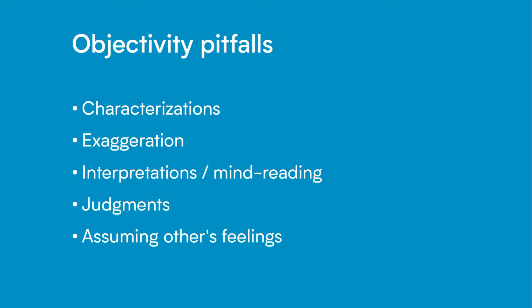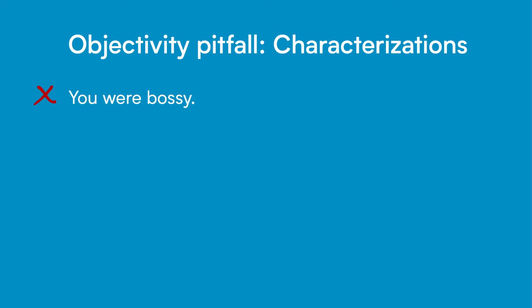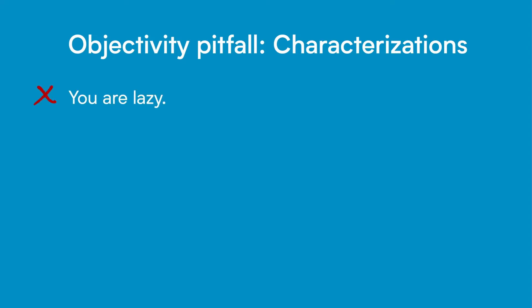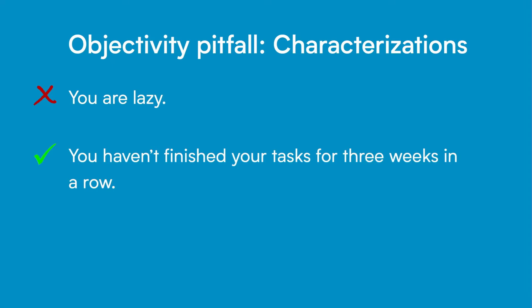The first objectivity pitfall is to characterize people. For example, it's not objective to say 'you were bossy' — instead, you can say 'you assigned tasks without our input.' It's not objective to say 'you are lazy' — instead, you could say 'you haven't finished your tasks for three weeks in a row.'